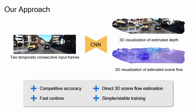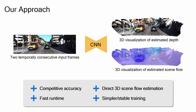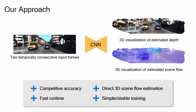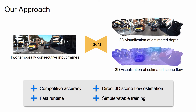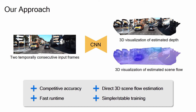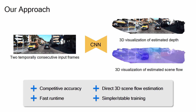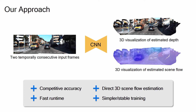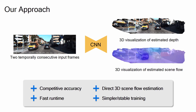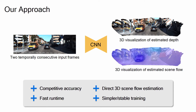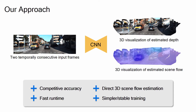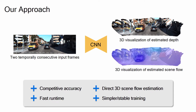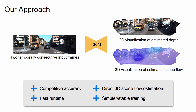We propose a novel deep learning approach for monocular scene flow which overcomes the limitations of previous work. Our model demonstrates competitive accuracy in real time, resolves the occlusion problem by directly estimating scene flow with the network, and demonstrates simple and stable training, which is preferred in practice.